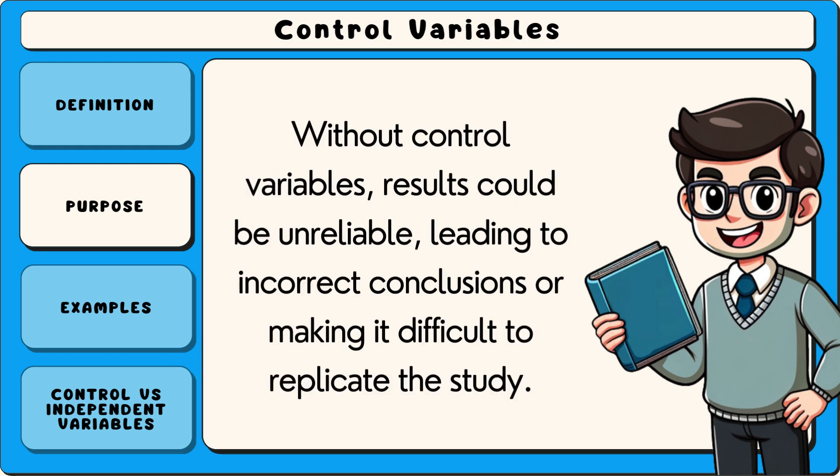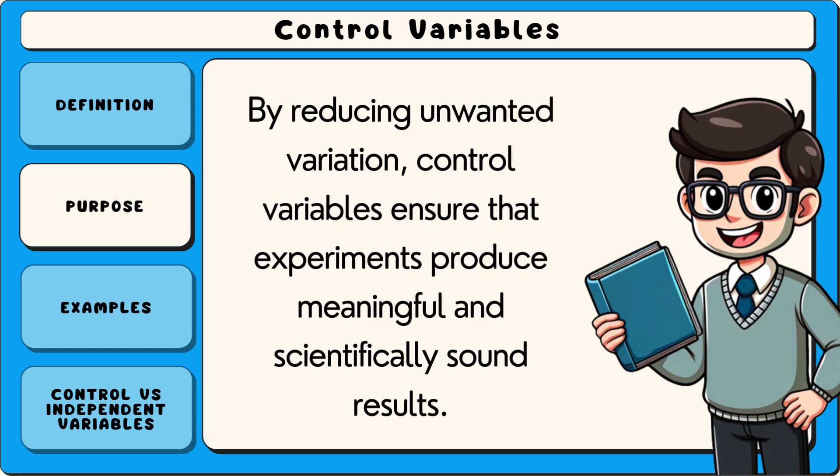Without control variables, results could be unreliable, leading to incorrect conclusions or making it difficult to replicate the study. By reducing unwanted variation, control variables ensure that experiments produce meaningful and scientifically sound results.